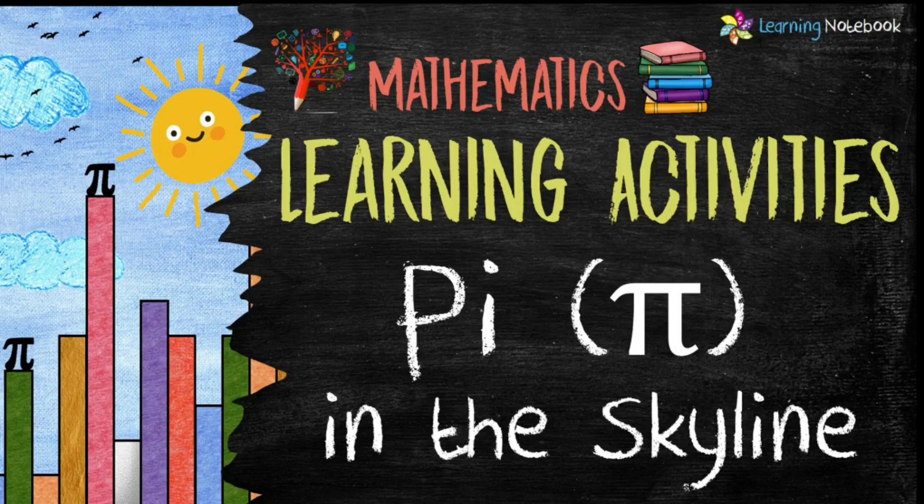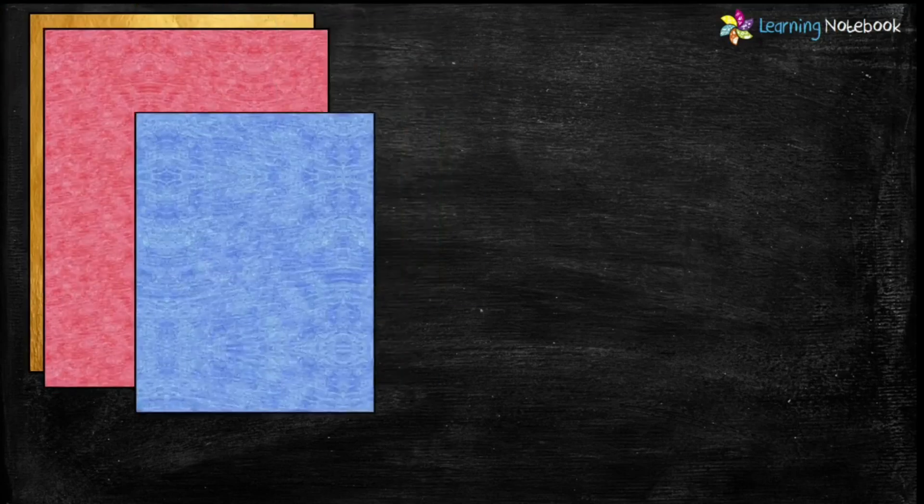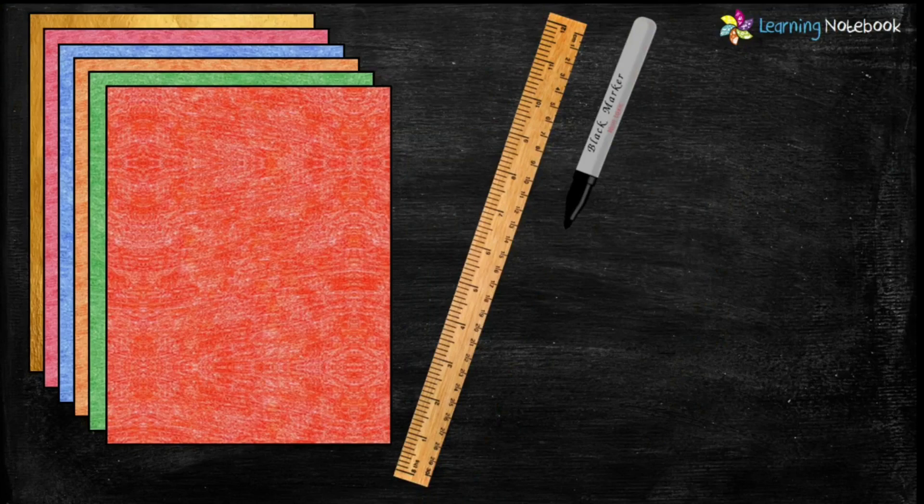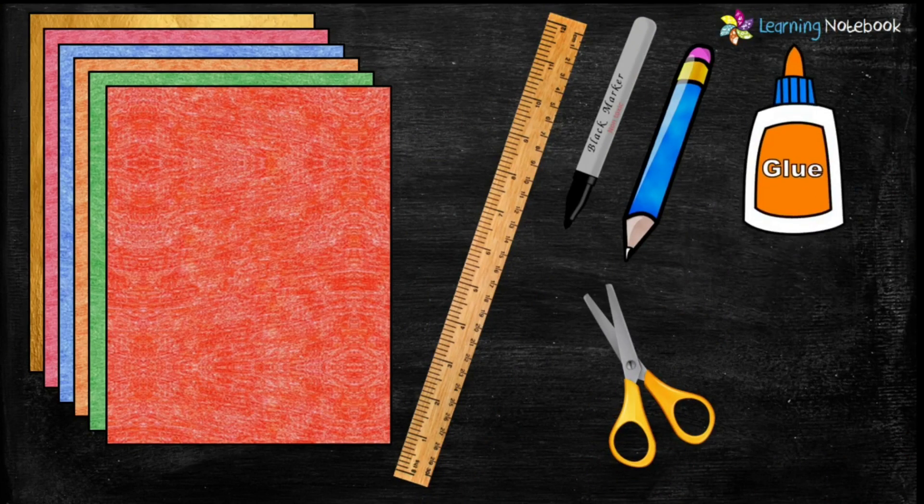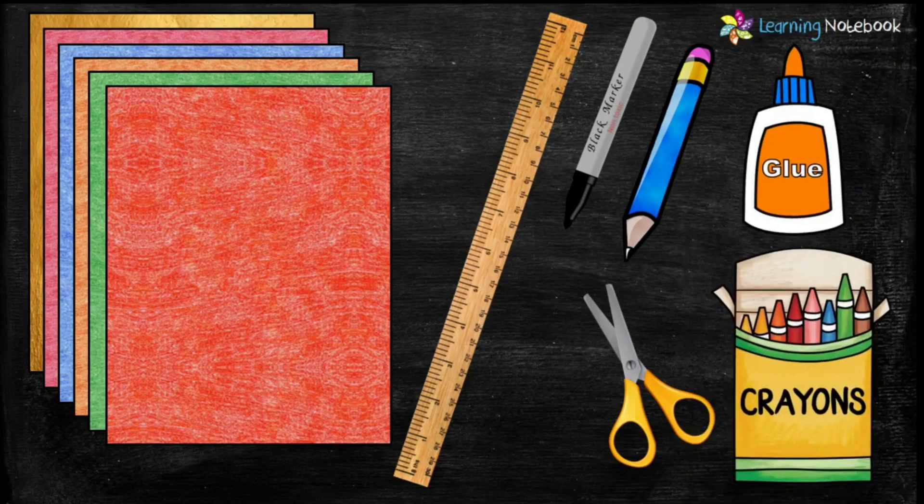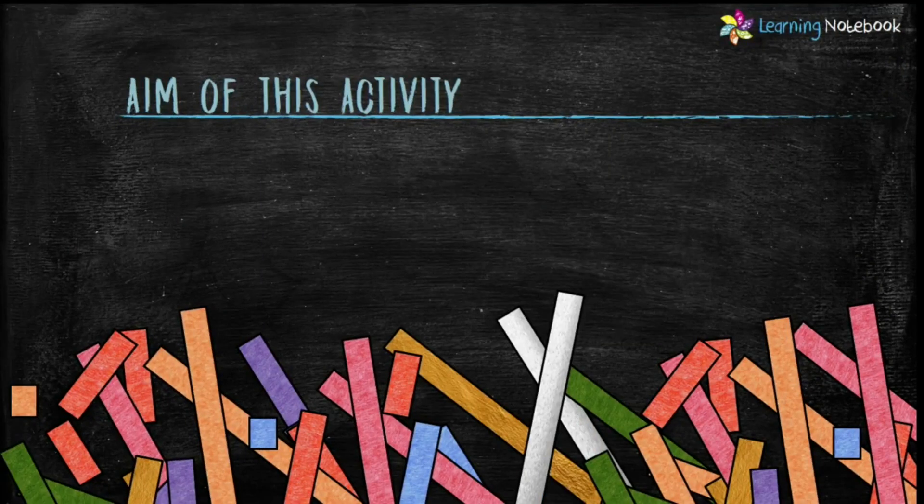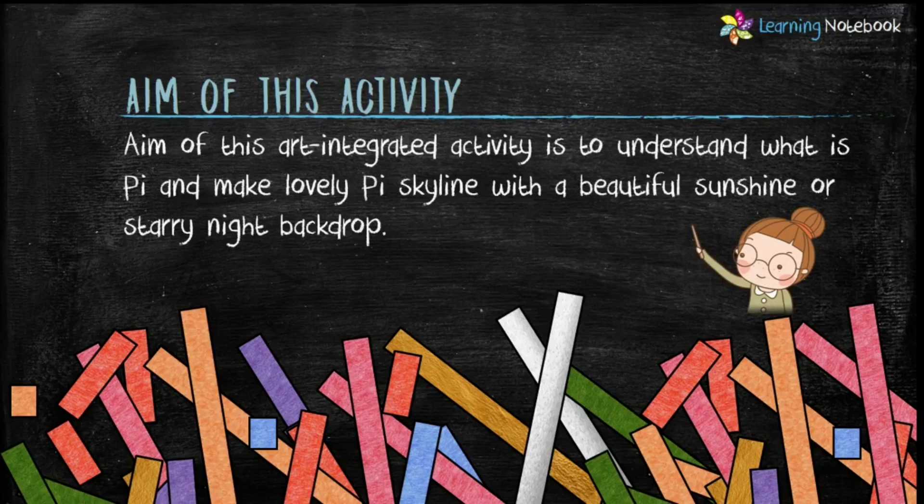For this activity we need colorful AC sheets, a ruler, a black marker pen, a pencil, a pair of scissors, glue, and few crayons. The aim of this art integrated activity is to understand what is pi.